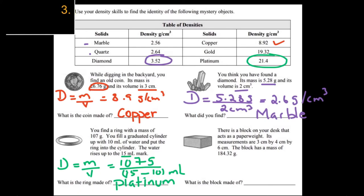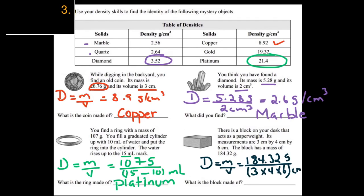The last question: there's a block on your desk acting as a paperweight with measurements 3 cm, 4 cm, and 6 cm, and a mass of 184.32 grams. D = M ÷ V = 184.32 ÷ (3 × 4 × 6) = 184.32 ÷ 72 = 2.56 grams per centimeter cubed. Looking at the table, 2.64 matches quartz, so the block is made of quartz.